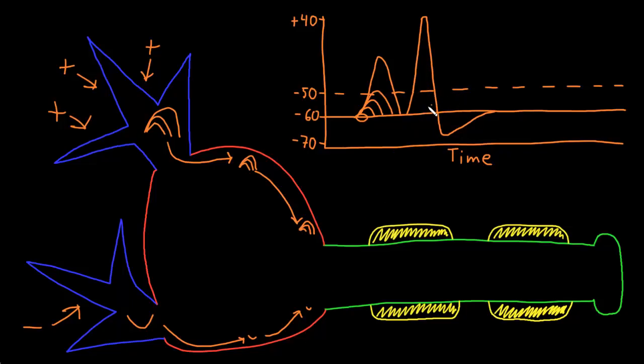The duration of an action potential is also usually consistent for any particular neuron. It's usually pretty quick, just a few milliseconds. Graded potentials can also be pretty fast. They can be a few milliseconds as well, but they can also be much, much longer than this. Graded potentials have a wide range of durations based on the duration of their inputs.